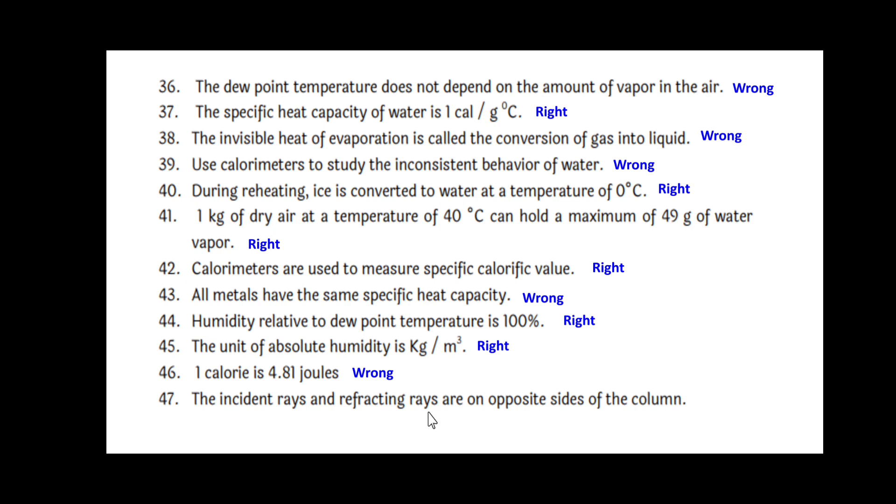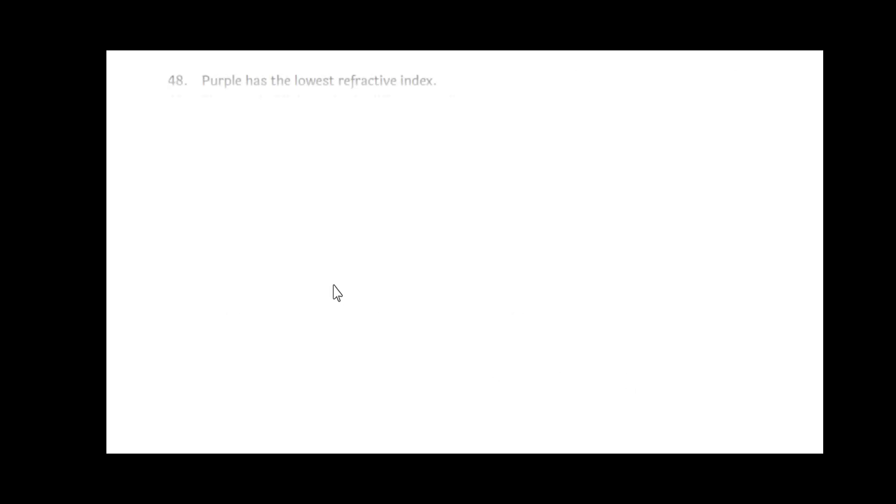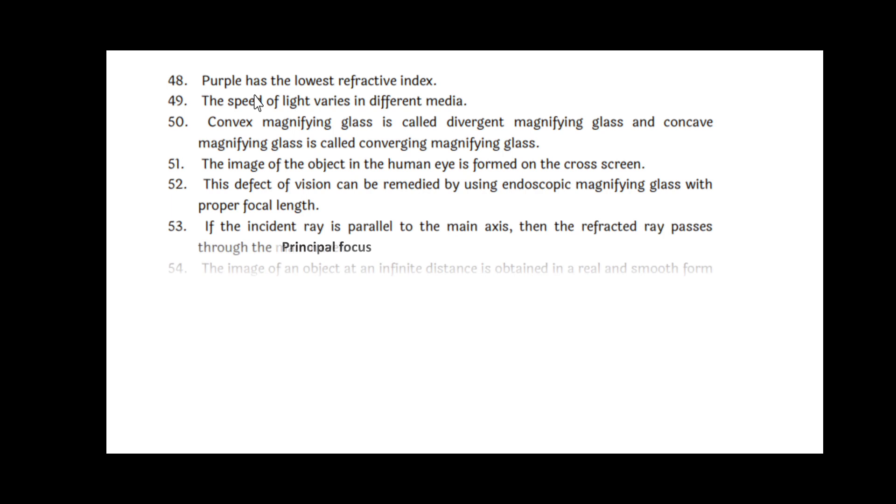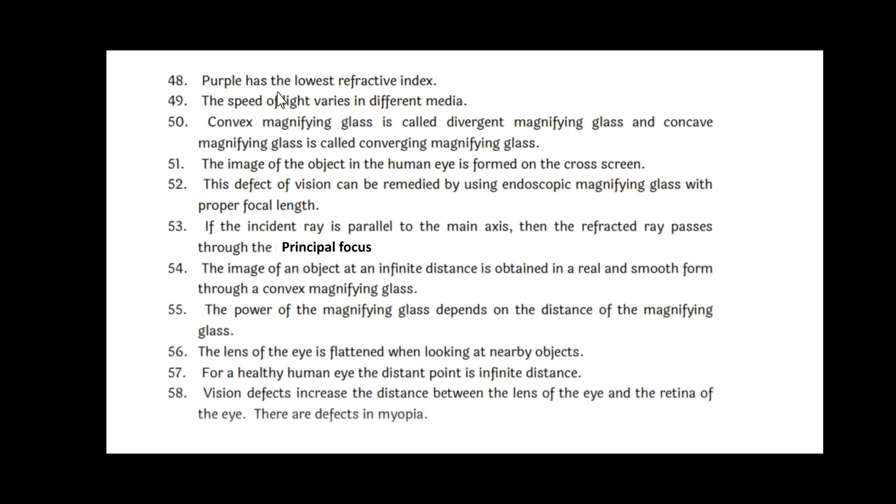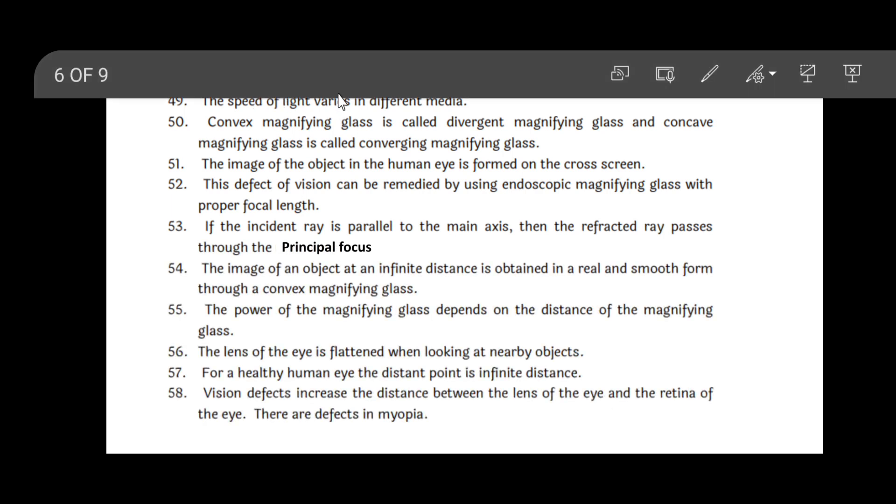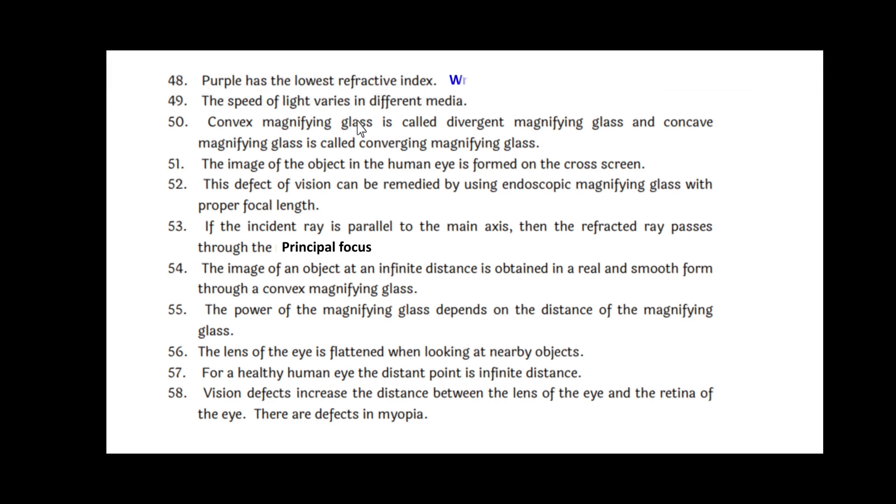The incident rays and refracting rays are on the opposite sides of the normal. Right. Purple has the lowest refractive index. That is wrong. The speed of light varies in different media. Right. Convex magnifying glass is called divergent magnifying glass, and concave magnifying glass is called converging magnifying glass. Wrong.